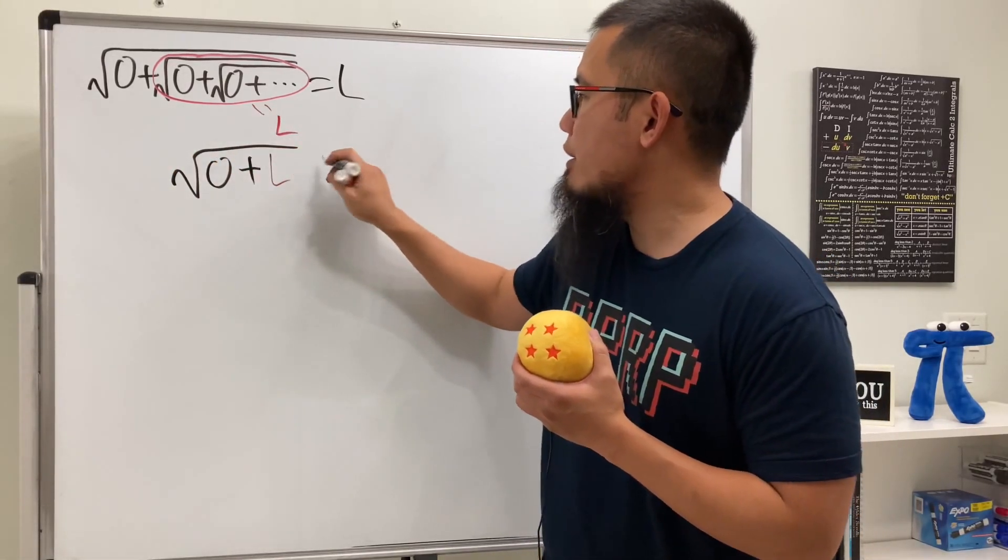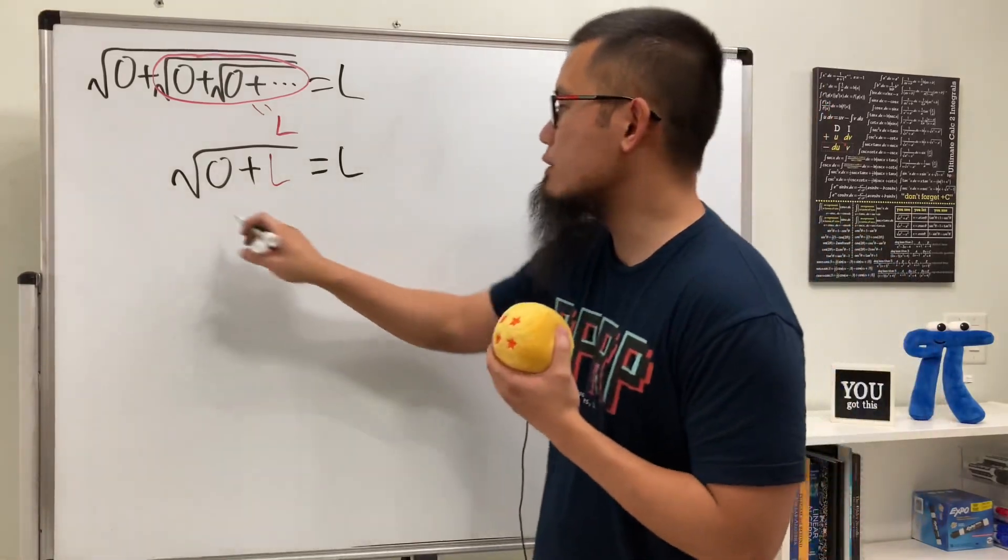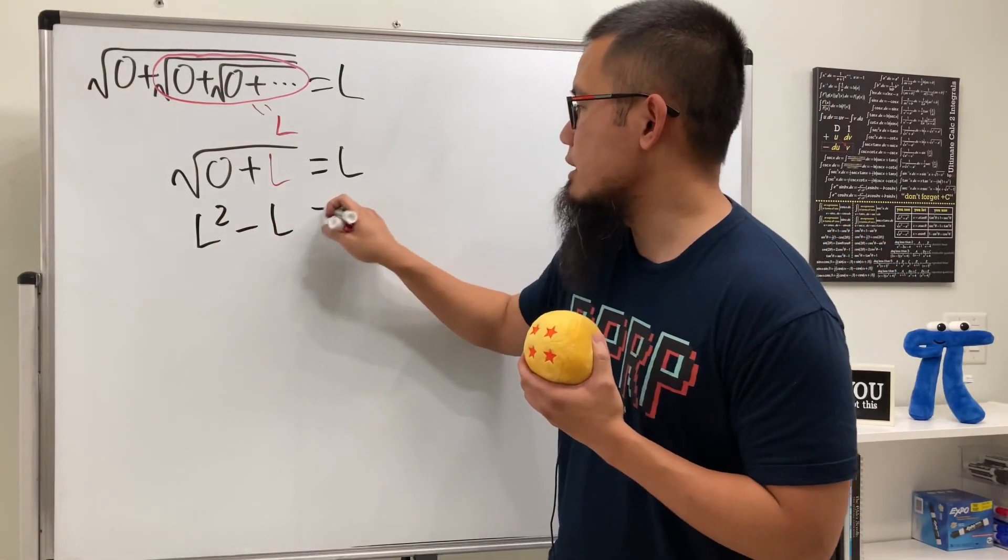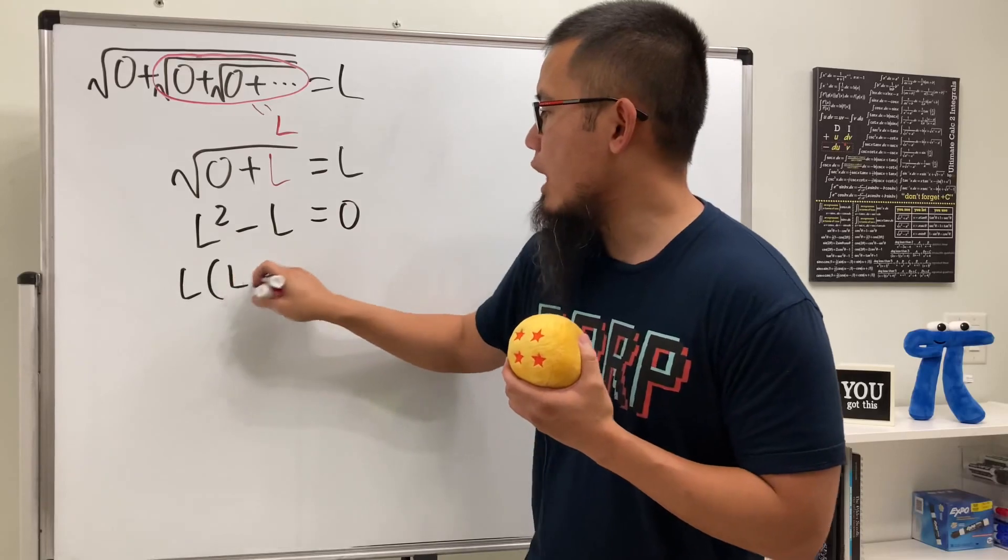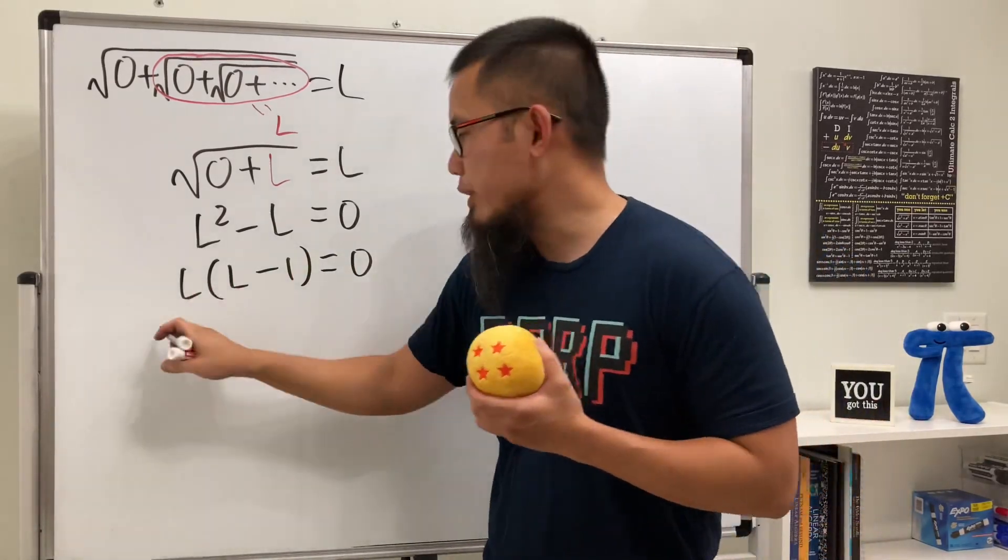Right here, this is equal to L. We can square both sides and then move things around so we can get L squared minus L, that's equal to zero. And then factor it, we get L times L minus one, that's equal to zero.